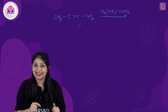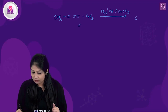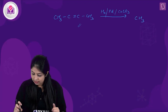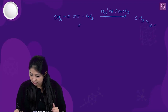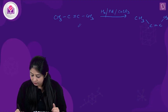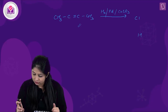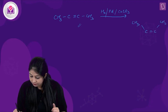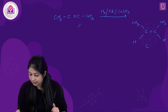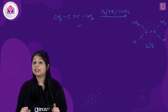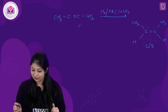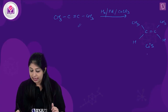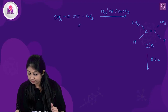Since the addition of hydrogen is syn addition — both hydrogen atoms are added from the same side — we get a cis alkene. The product is: CH₃ and H on one carbon, CH₃ and H on the other carbon of the double bond, giving us a cis alkene after the first reaction.